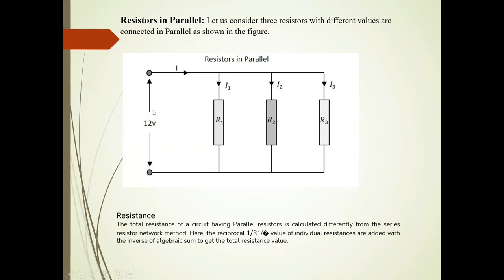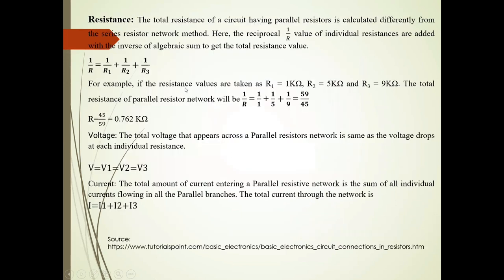Here voltage is 12 volt. Now resistance of this total circuit is given by 1 upon R is equal to 1 upon R1 plus 1 upon R2 plus 1 upon R3.